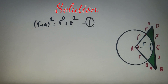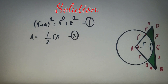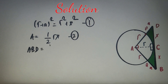The area of a triangle is half times base times height. For triangle ABC or ACD, the base is x and the height is R, giving an area of (1/2)Rx. This is equation two. Since triangles ACD and ABC are equal in area, the total area of triangle ABD is (1/2)Rx + (1/2)Rx = Rx. This is equation three.